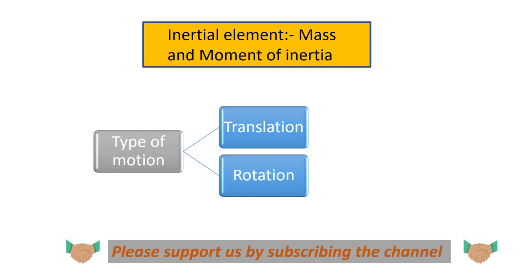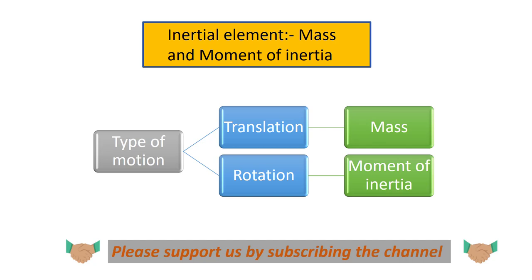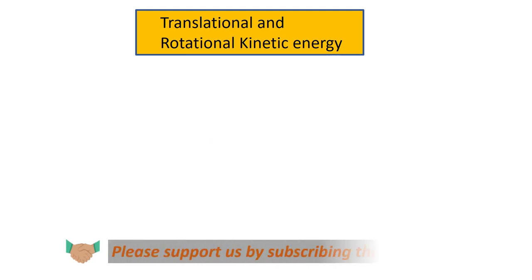The question is: which inertial properties are related to translation and rotation? For translation, the inertial property required is mass, while for rotation it is the moment of inertia. The main difference is that translation depends only on the total mass of the system — whether mass is evenly or unevenly distributed does not affect translation — but mass distribution does affect rotational motion.